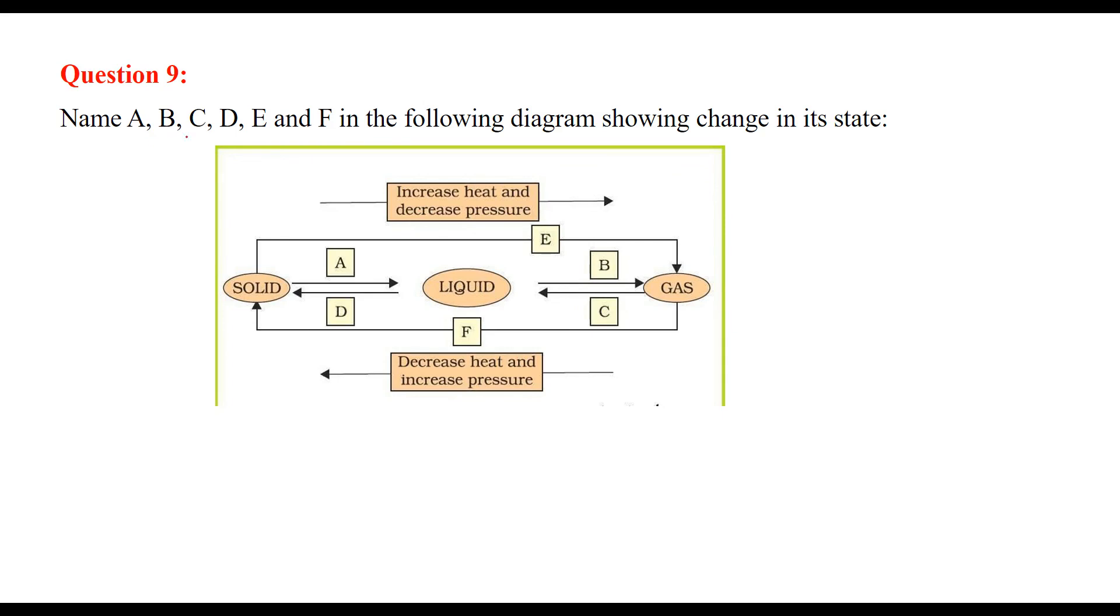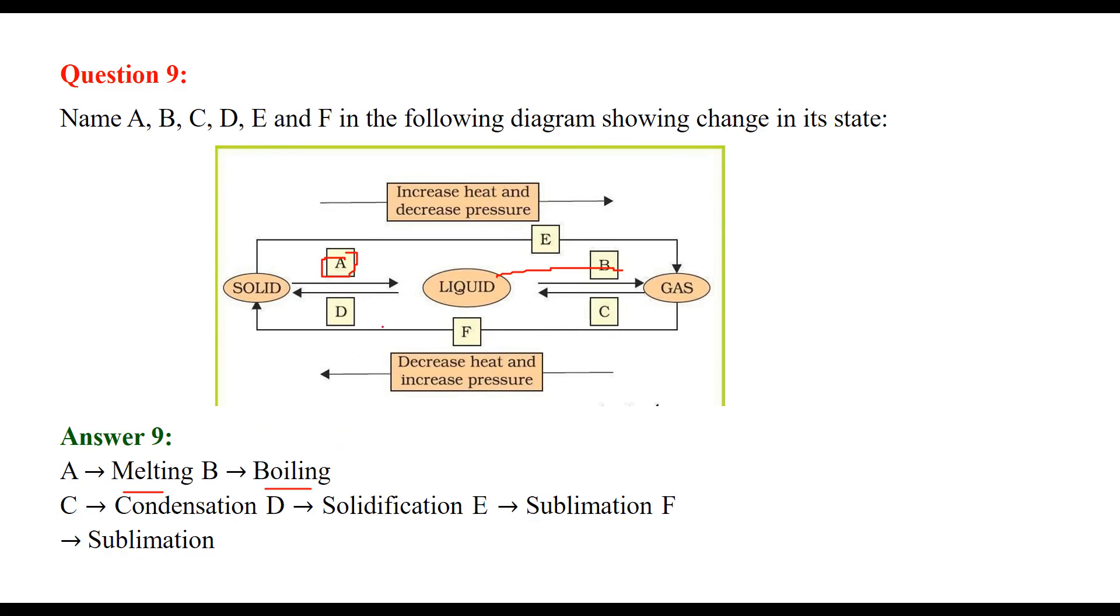Question 9: Name A, B, C, D, E, and F in the following diagram showing changes in state. A is solid to liquid - melting. B is liquid to gas - boiling. C is gas to liquid - condensation. D is liquid to solid - solidification. E is solid to gas (increase heat, decrease pressure) - sublimation. F is gas to solid (decrease heat, increase pressure) - sublimation.